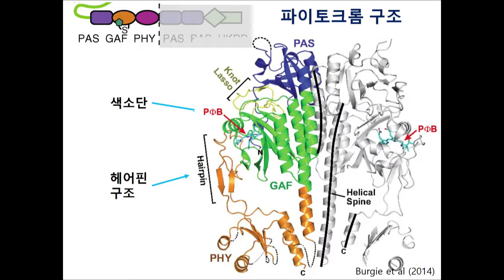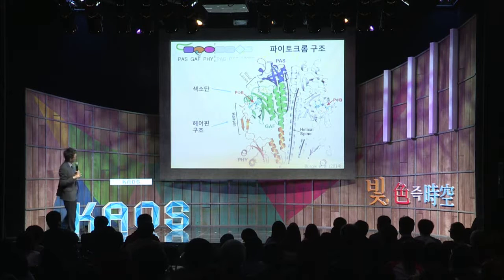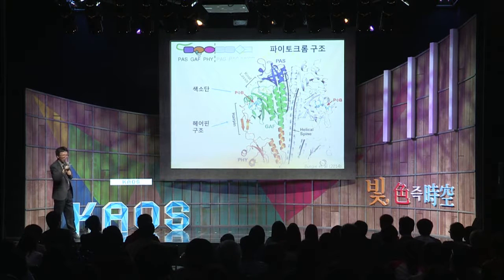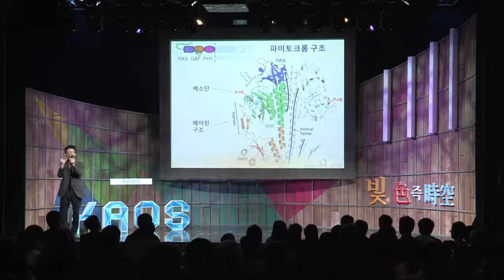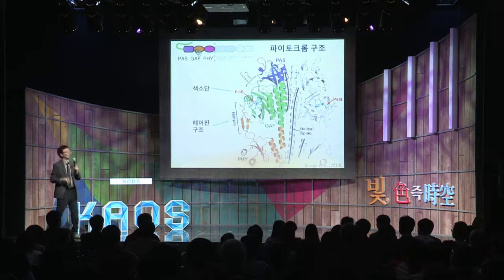GAF 도메인 한쪽에 색소단이 결합되어 있는 형태를 보이고 있어요. 재밌는 구조가 보이는데요, 여기 PHY 도메인에서 헤어핀처럼 끈이 하나 나와가지고 색소단 쪽을 덮고 있는 걸 보실 수 있어요. 마치 GAF 속에 색소단이 있고, PHY 도메인에서 끈이 나와서 이걸 덮고 있는 그런 형태를 보이고 있습니다.